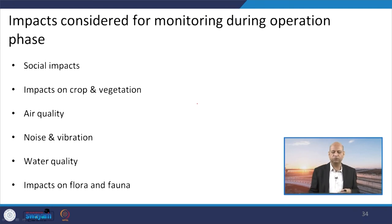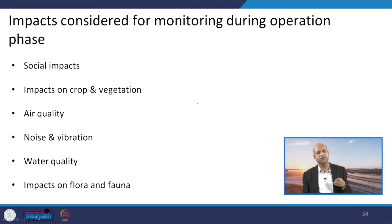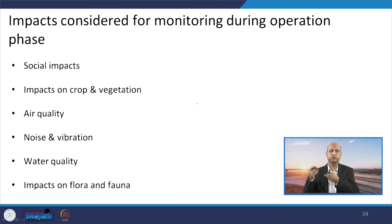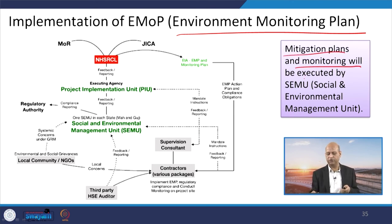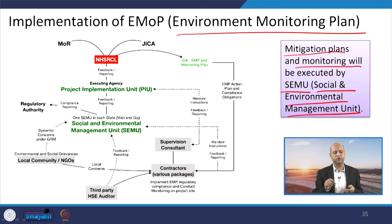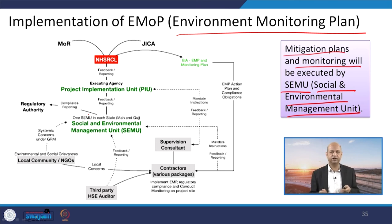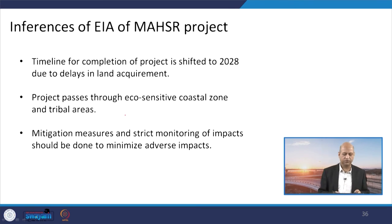The impacts considered for monitoring during the operation phase include social impacts, impacts on crops and vegetation, air quality, noise and vibration, water quality, and impacts on flora and fauna. All these aspects are part of the detailed EIA for impact assessment and continuous monitoring. An Environmental Monitoring Plan has been put in place, and mitigation plans will be executed by SEMU — the Social Environmental Management Unit — which submits reports periodically to officers for review.